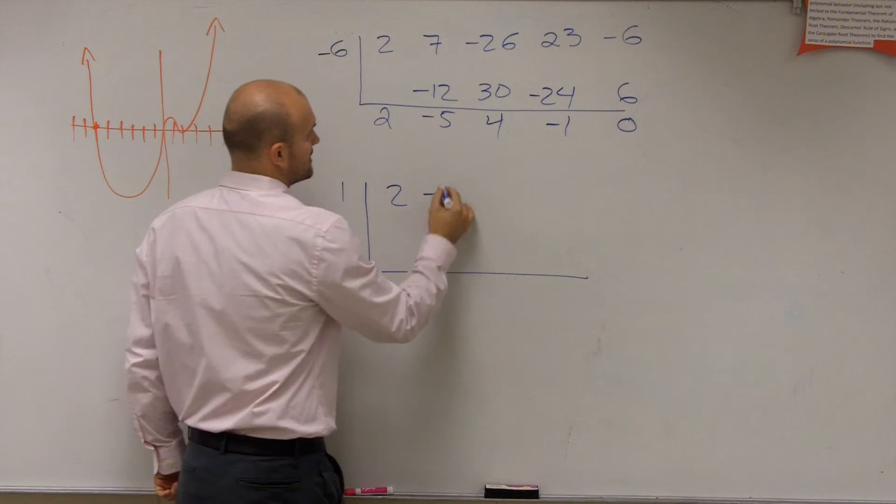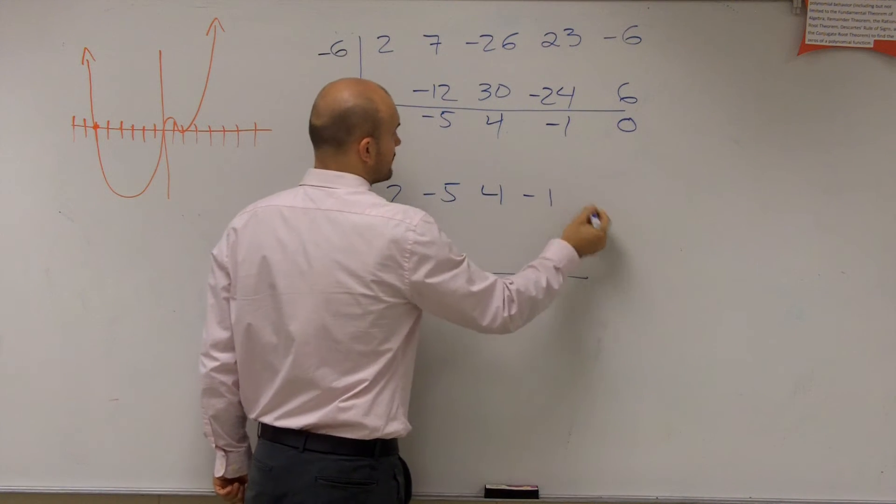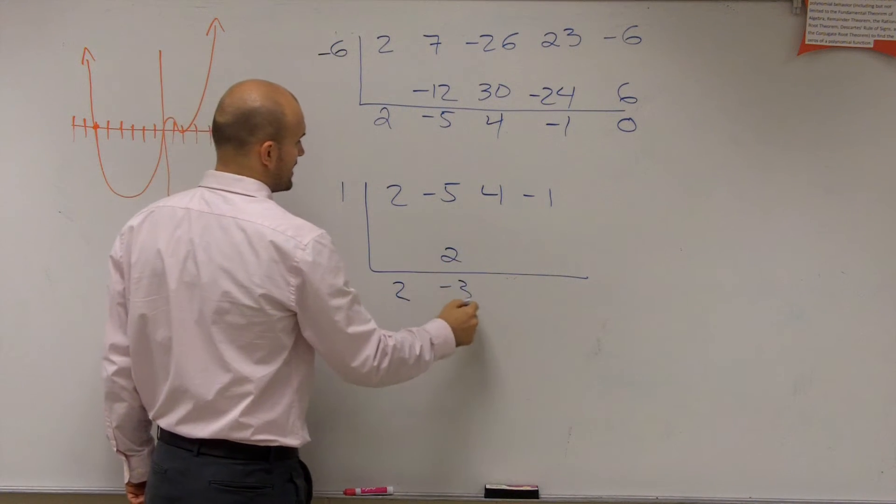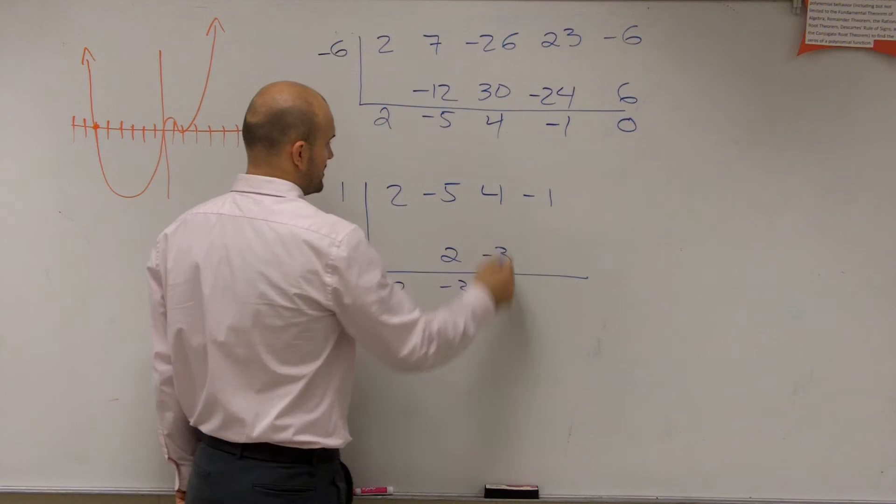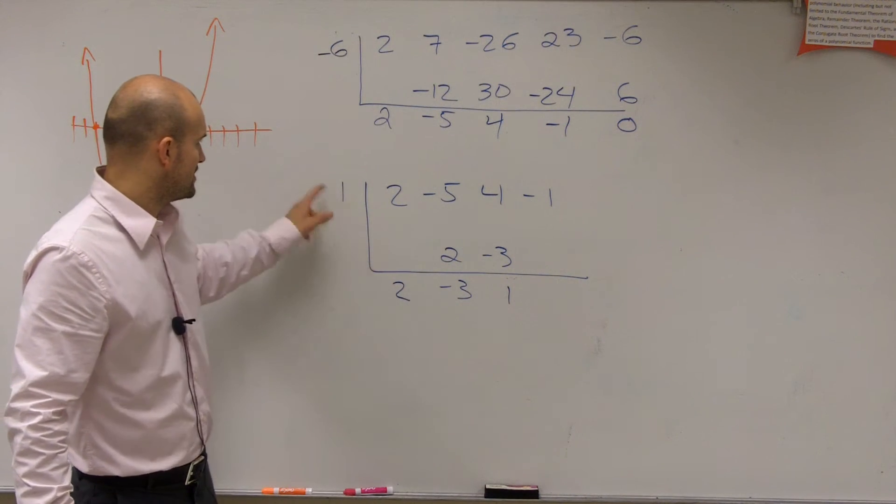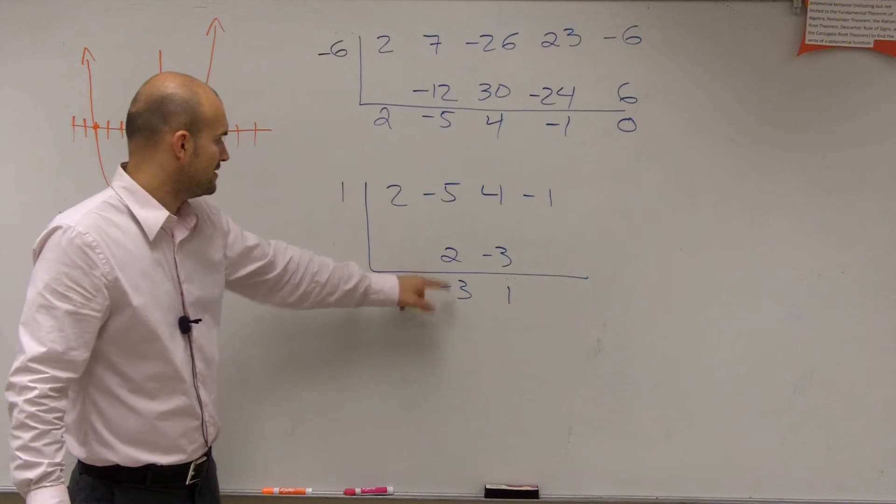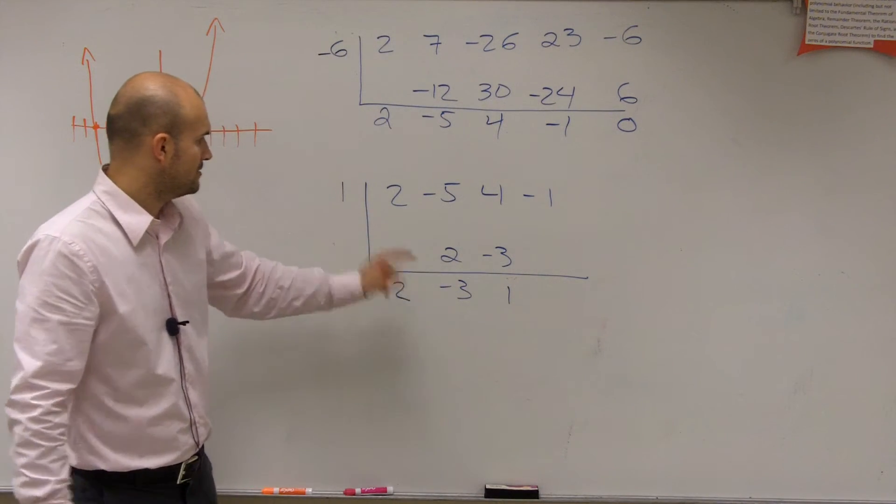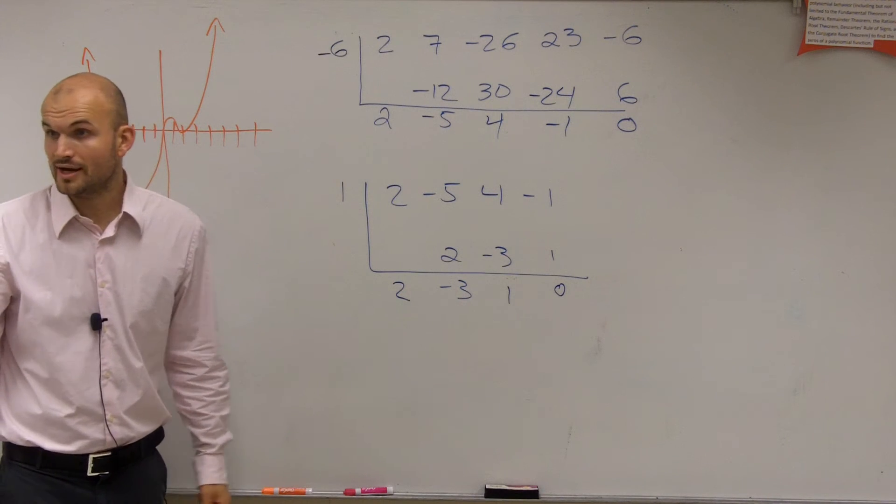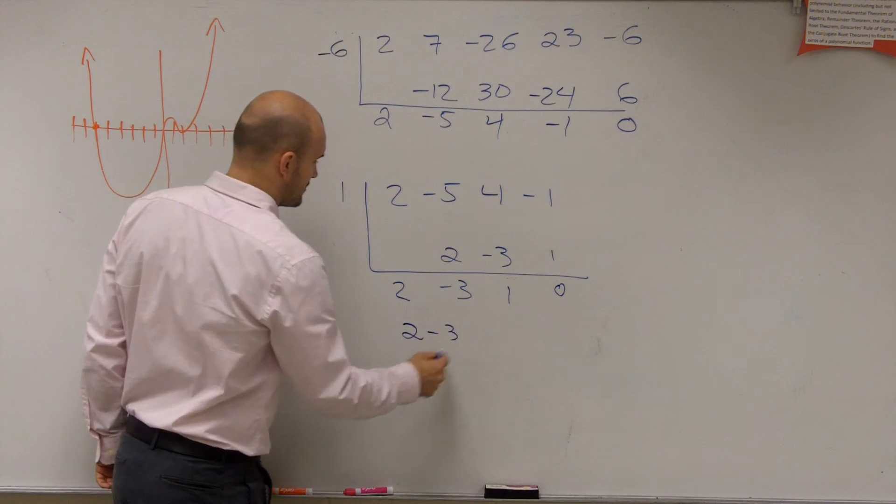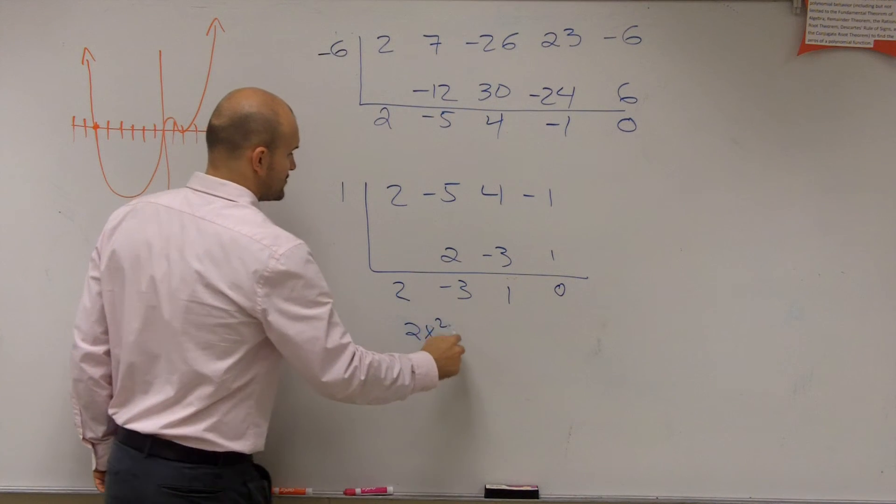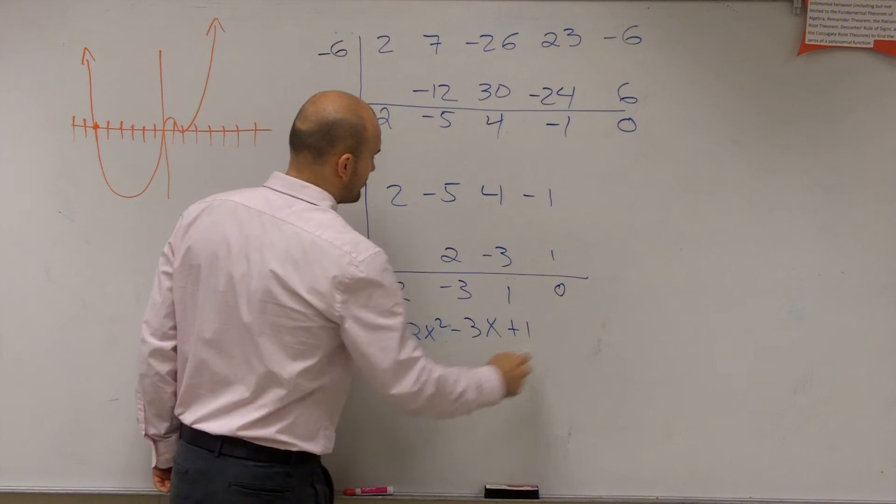So now, remember what we did last class or two class periods ago? Now, I can use this result. And let's do synthetic division with 1. So I'll do 2, negative 5, 4, negative 1. So I'll bring down the 2. 2 times 1 is 2, negative 3. Negative 3 times 1 is negative 3, 1. 2 times 2 is 2, 2, negative 3, positive 1. Yeah, it's 1. I'm right. 0. Pretty cool, right?